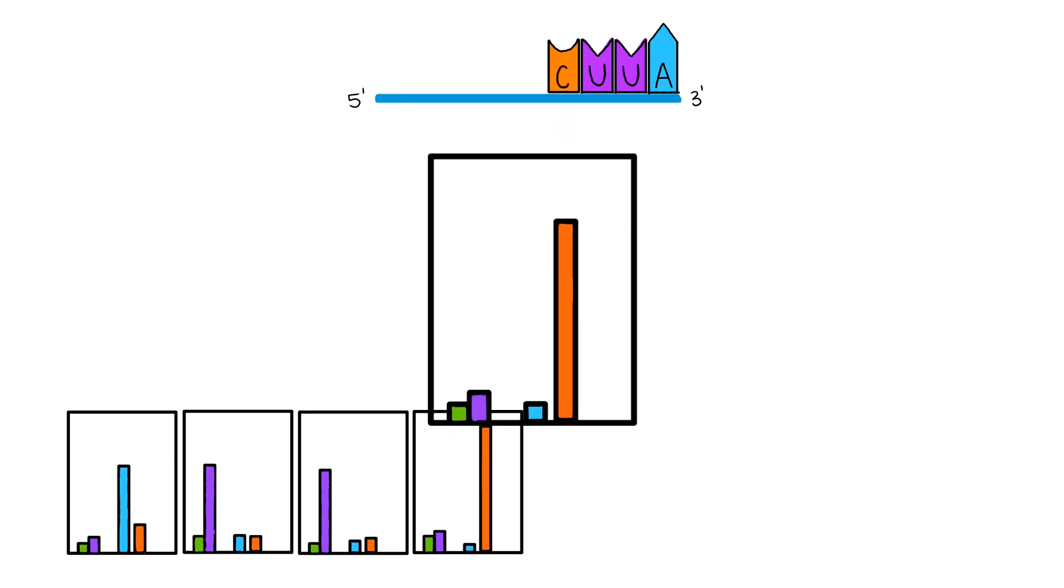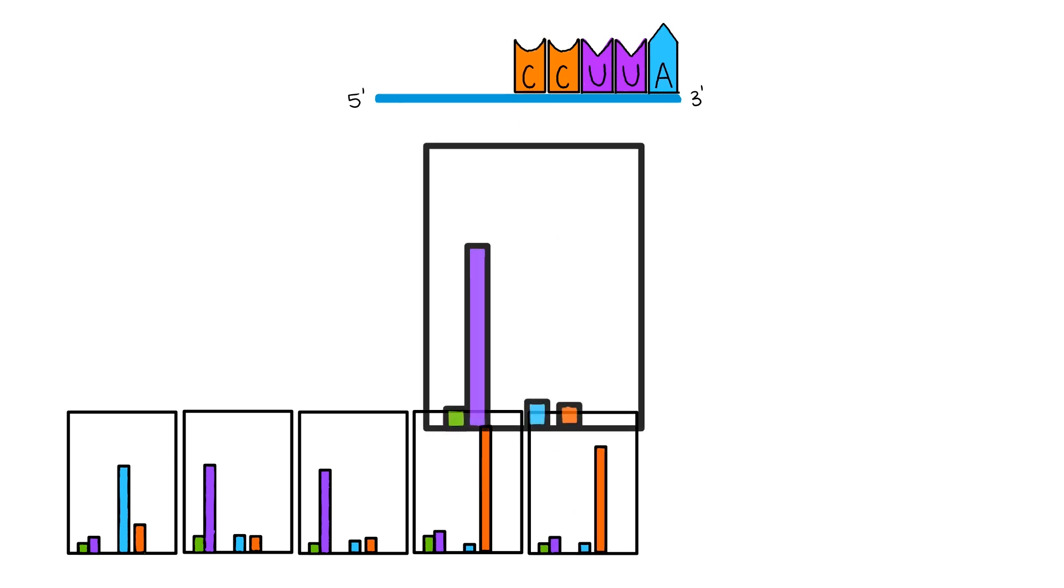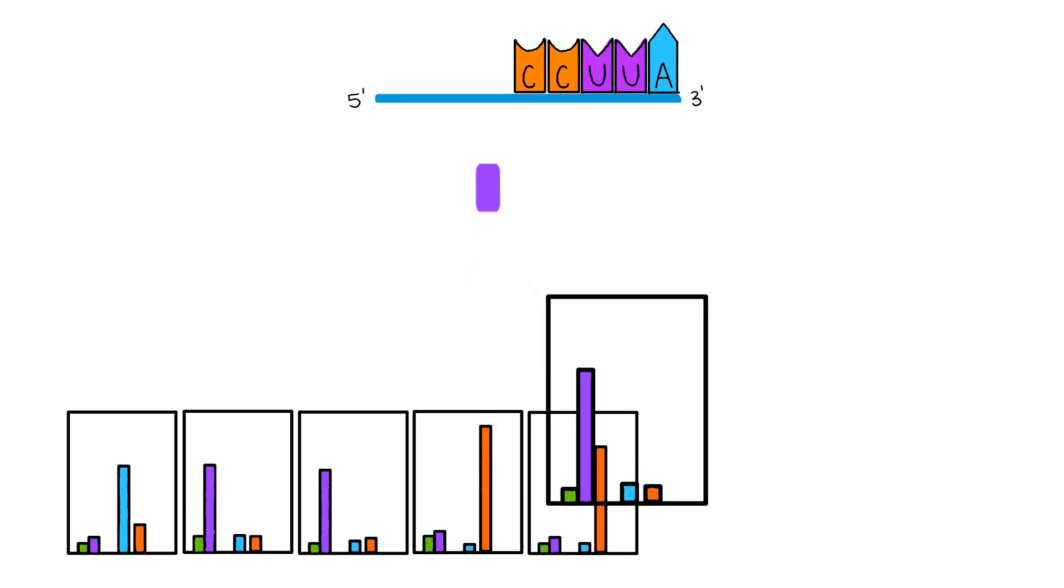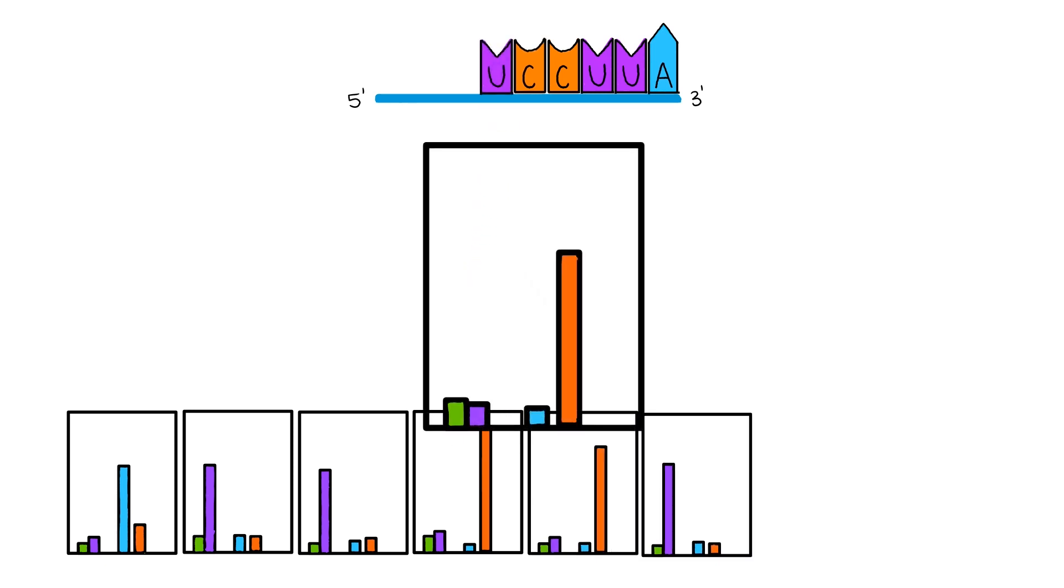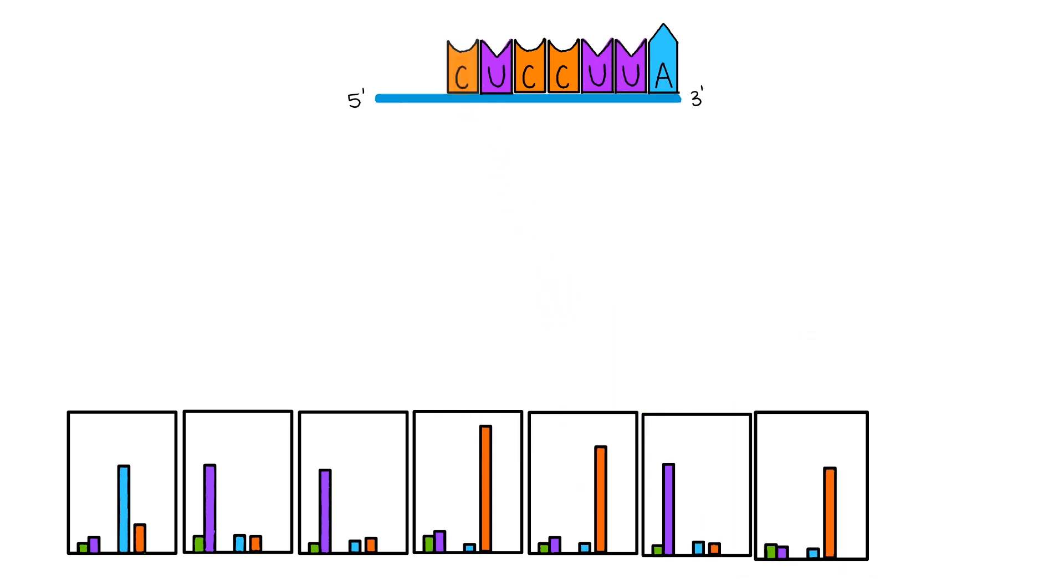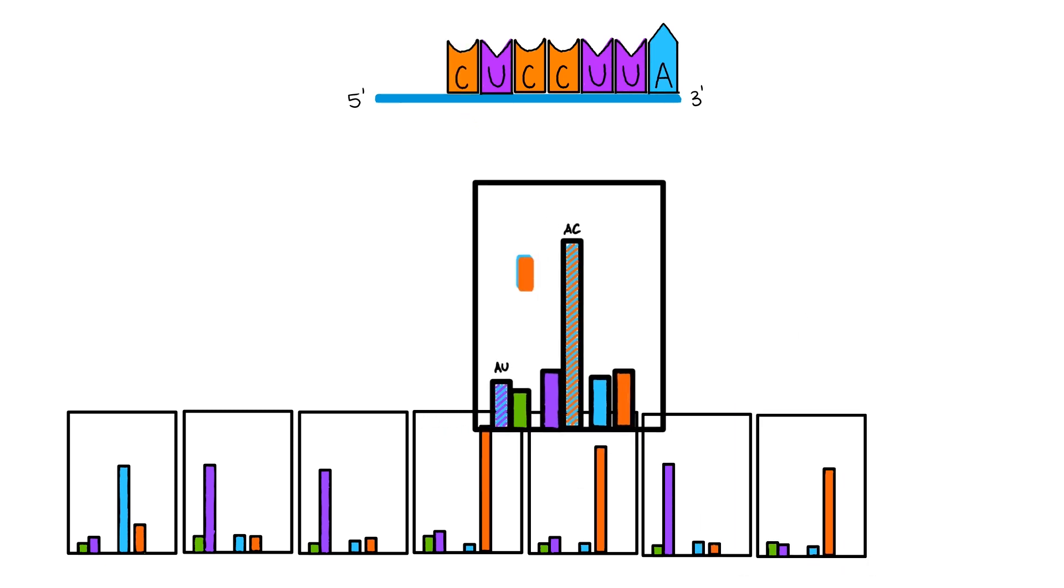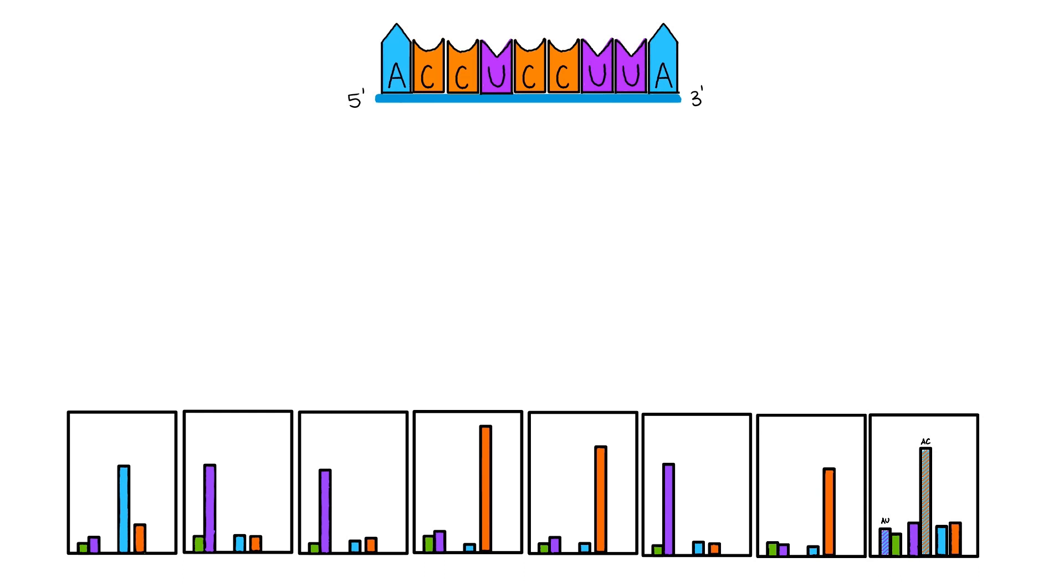This determined which nitrogenous base was removed. In this way, they were able to determine the three prime terminus to be A-C-C-U-C-C-U-U-A.